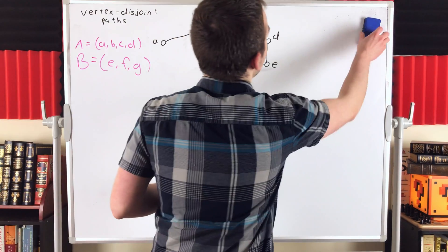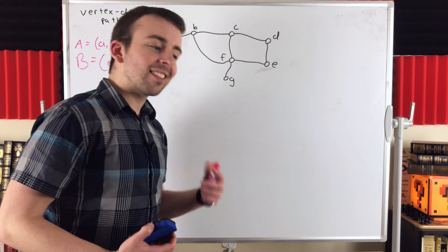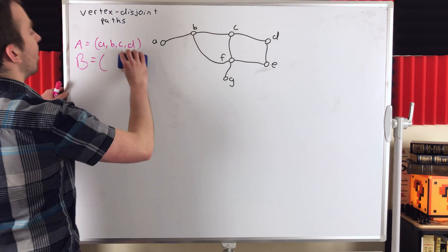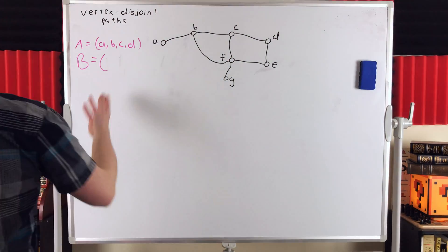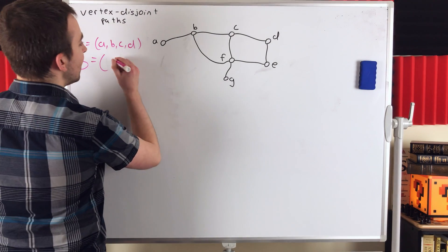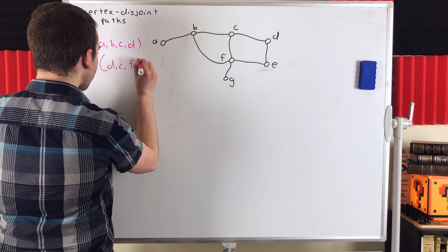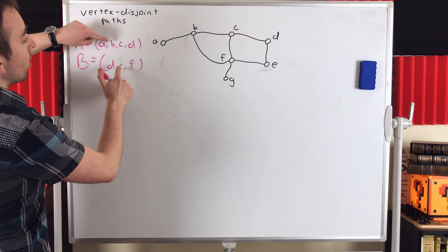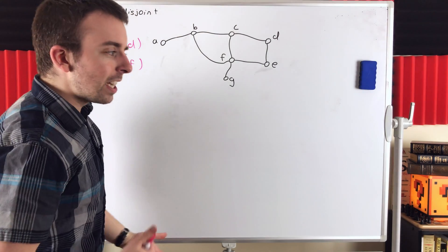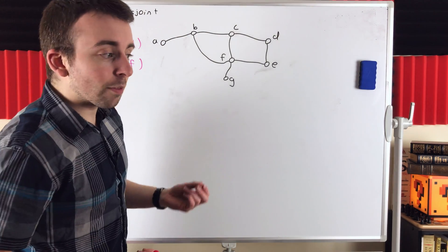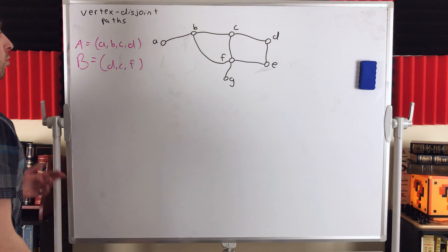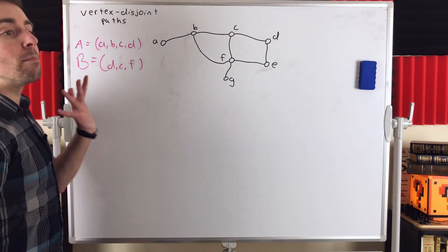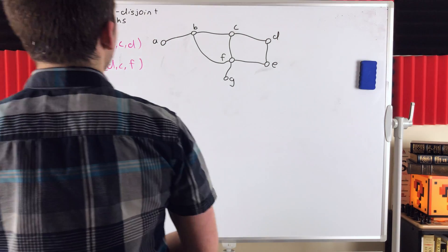One thing I want to make sure is clear is that the positions of the vertices in the paths doesn't matter when deciding whether or not they're disjoint. Suppose we consider path B to be the path going from D to C to F. These two paths are not vertex disjoint. Their first vertices aren't the same, and their second vertices aren't the same, and their third vertices aren't the same either. So you might think they're vertex disjoint, but they do have vertices in common — the vertices D and C. It doesn't matter that they appear at different points in the paths.